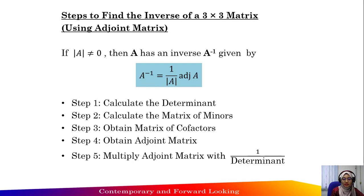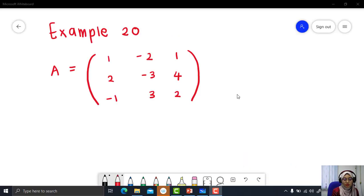Steps to find the inverse of a 3 by 3 matrix using adjoint. If the determinant of A is not equal to 0, then A has an inverse given by the formula: A inverse equals 1 over determinant of A, multiplied by adjoint of A. Step 1: calculate the determinant. Step 2: calculate the matrix of minors. Step 3: obtain the matrix of cofactors. Step 4: obtain the adjoint matrix. Step 5: multiply adjoint matrix with 1 over determinant. Let's try Example 20 — given a 3 by 3 matrix A, find the inverse using the adjoint matrix.